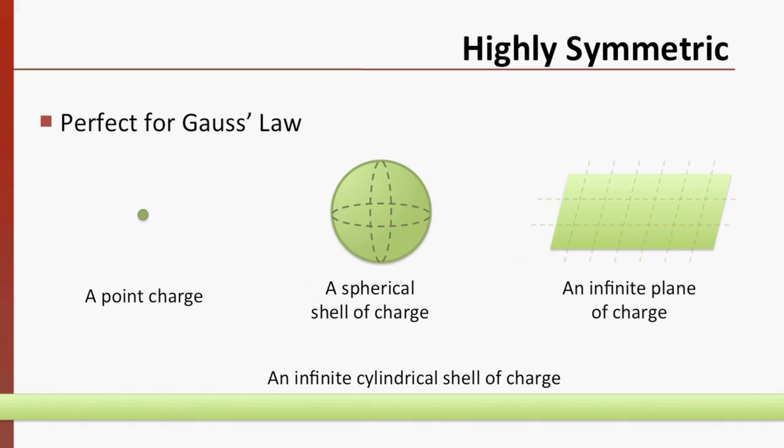These cases are ideal. A point charge, a spherical shell, an infinite sheet of charge, or an infinite cylindrical shell of charge. No doubt you've used Gauss's law in these charge distributions before. How can we describe such distributions and find others like them?